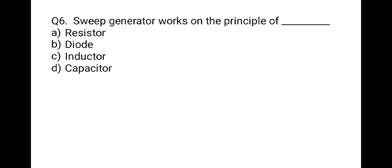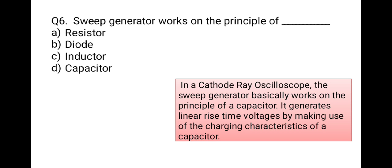The next question: on what principle does a sweep generator work? The main component in a sweep generator is a capacitor. In CRO, the sweep generator basically works on the principle of a capacitor — it generates a linearly rising voltage by making use of the charging characteristics of a capacitor. So the correct option is capacitor.